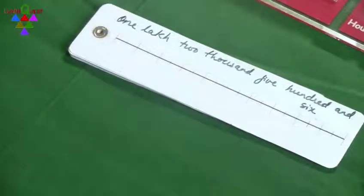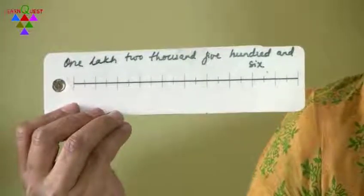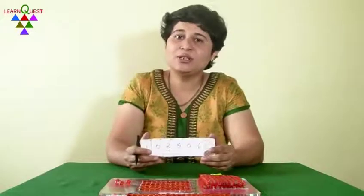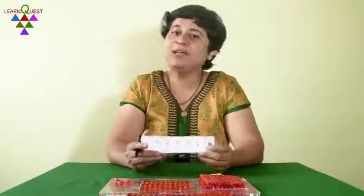Ask students to hold up their fan this way when they show the number name or even when they show the numbers. When the whole class shows this, it is very easy for the teacher to identify those students who have not understood the concept and focus and help them out. This fan has helped many students to quickly understand large numbers. Make the most of it.